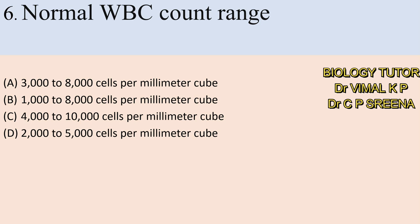Normal WBC count range: A. 3,000 to 8,000 cells per mm³, B. 4,000 to 10,000, C. 4,000 to 10,000, D. 2,000 to 5,000. Here the answer is C — 4,000 to 10,000. In some books it may vary from 4,000 to 11,500, but here the answer is 4,000 to 10,000.